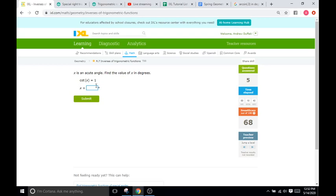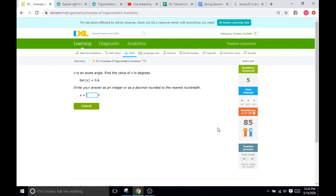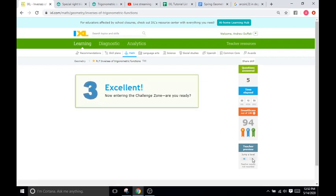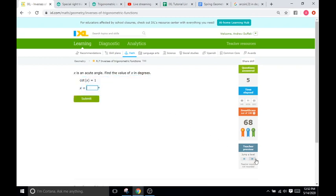Cotangent of 1. That's just going to be tangent of 1 over 1. Then you flip it. So it's cotangent 1 over 1. If you get any of the other trig functions here that are not sine, cosine, and tangent, then all you're going to do is the same process except you're going to flip them upside down.